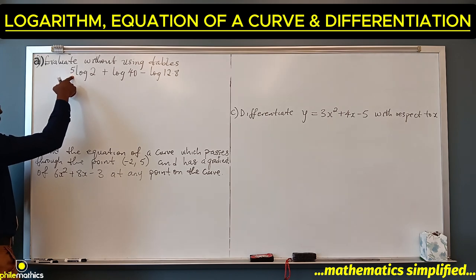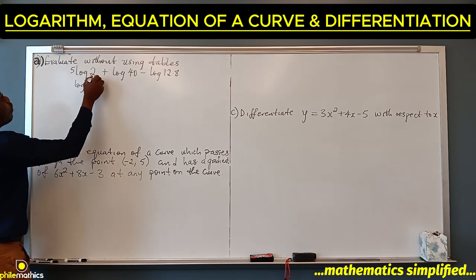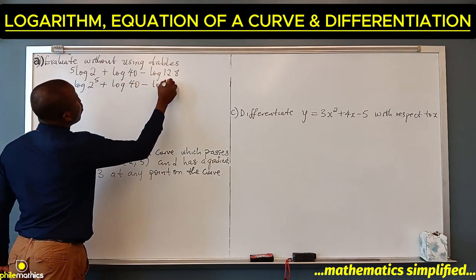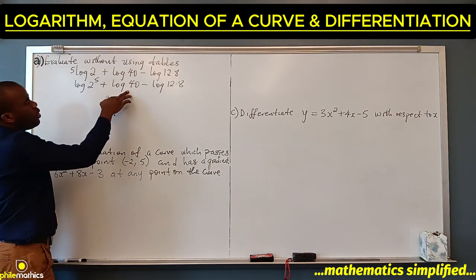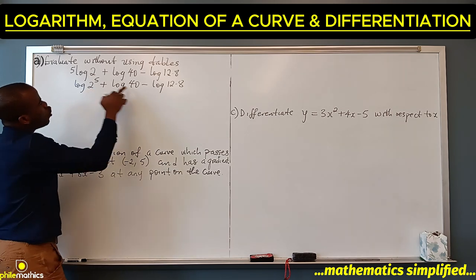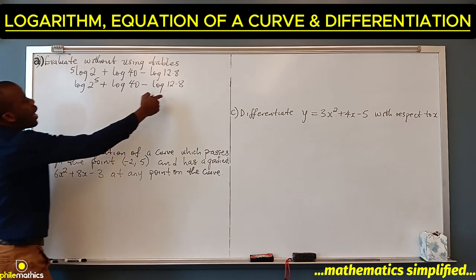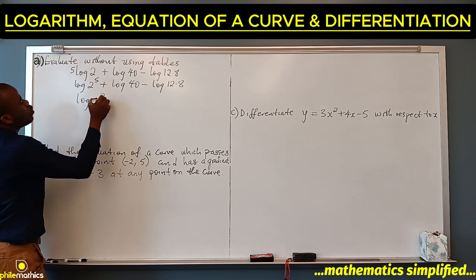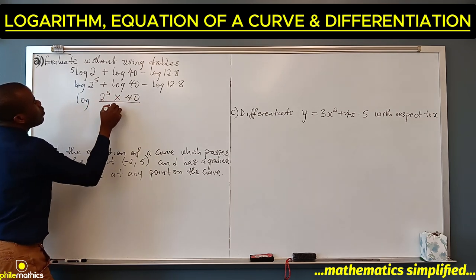The 5 in front of log 2 has to go to the power, so we have log 2 to power 5, plus log 40, minus log 12.8. From logarithm laws, when we add logarithms it's the same as taking the log of the multiplication of their numbers, and when we subtract we divide. So I can compress this to: log of 2 to power 5 times 40 over 12.8.